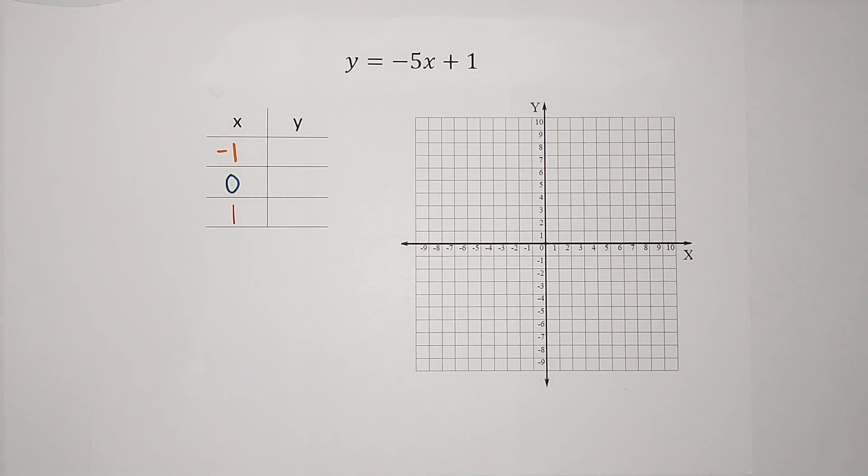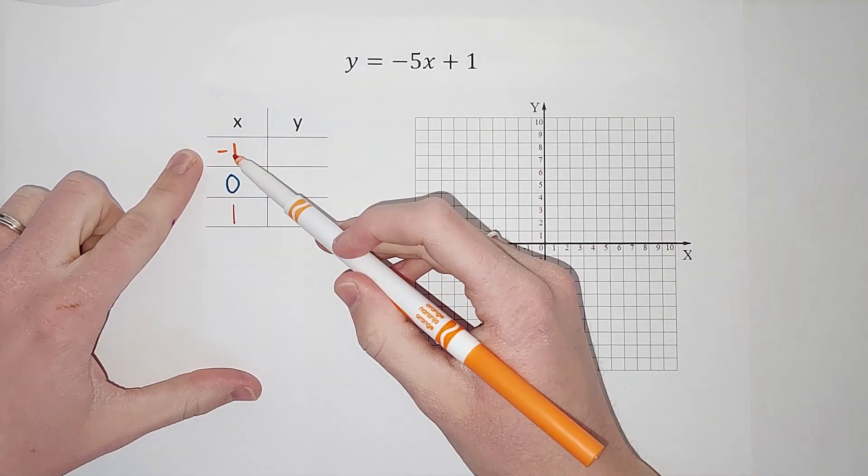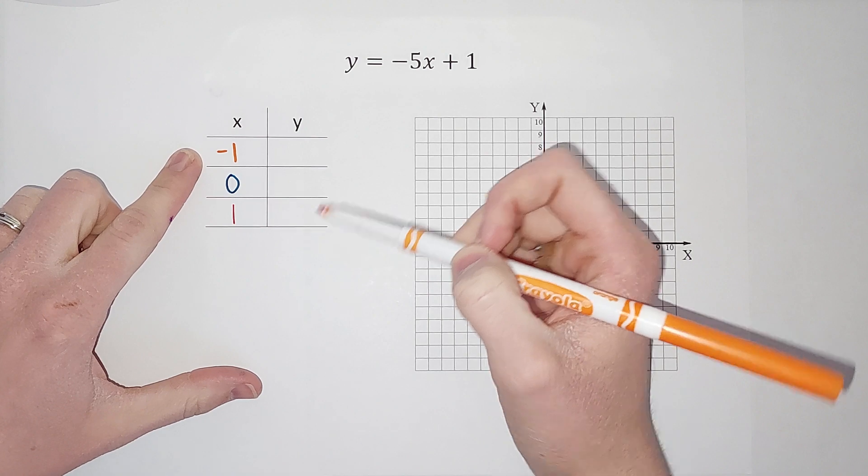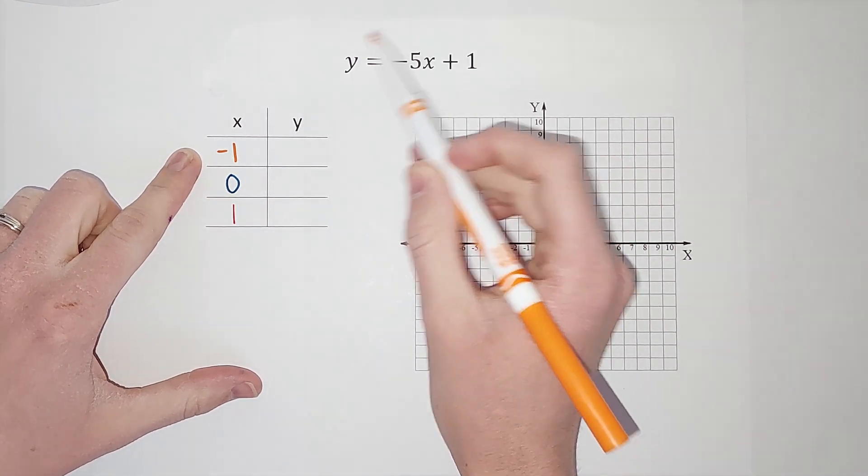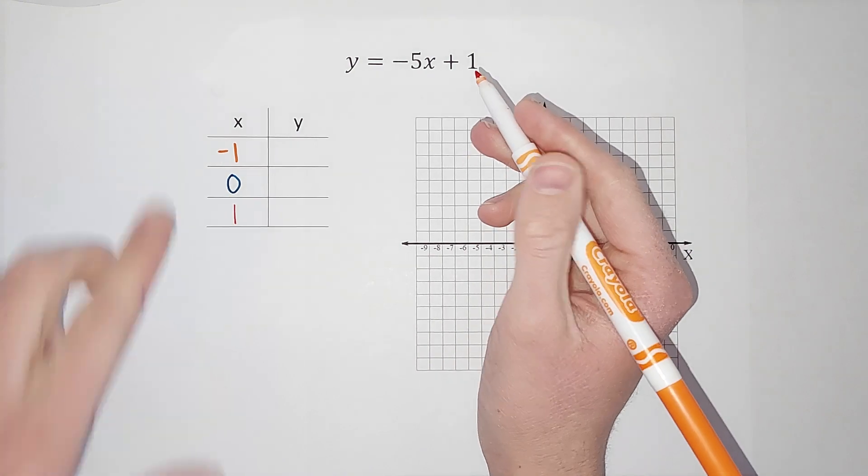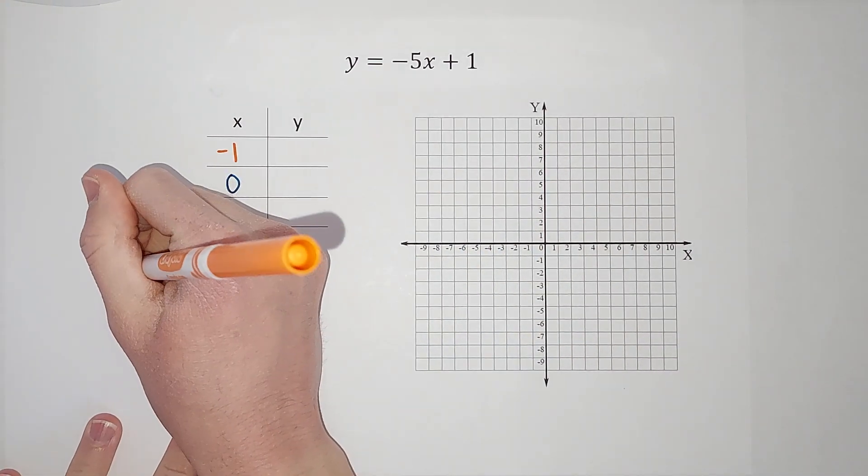So we want to know what Y is when X is negative one. So we're going to plug in negative one for X here and see what we get for Y. So Y equals...